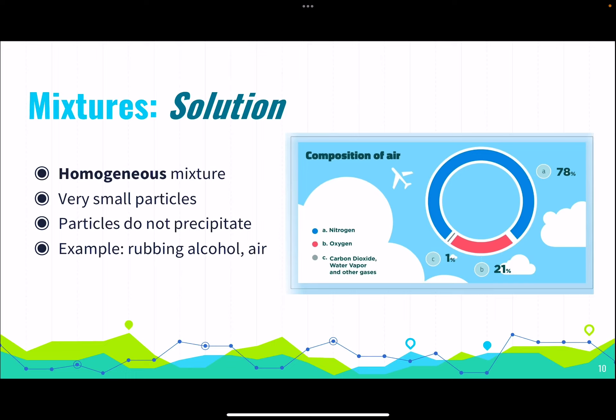Mixtures can be divided into solutions, colloids, and suspensions. A solution is a homogeneous mixture made up of very small particles that do not precipitate — they do not settle down. Examples include rubbing alcohol, where we cannot see the different parts of the mixture. Air is also a mixture — made up of about 78% nitrogen, 21% oxygen, and 1% other gases. When we breathe, we don't separate these components; air is an excellent example of a solution.